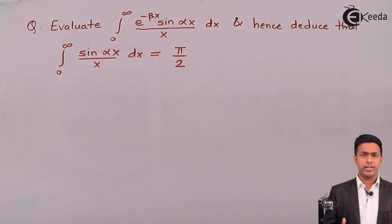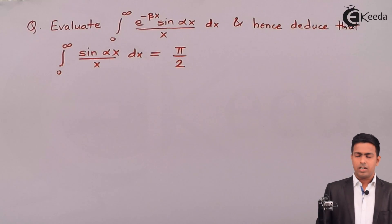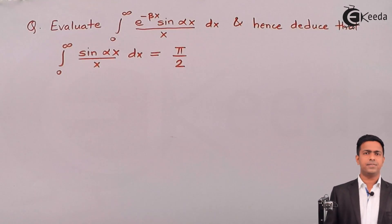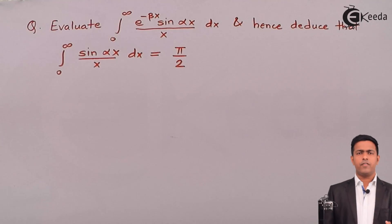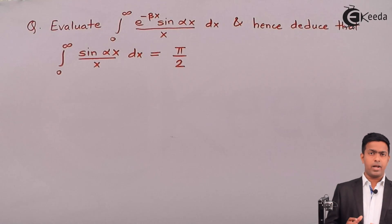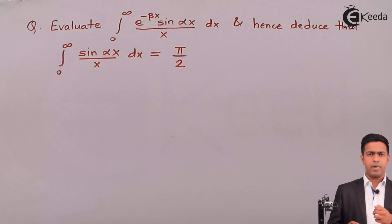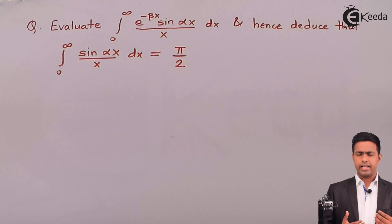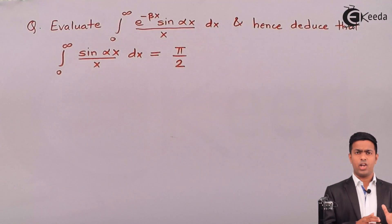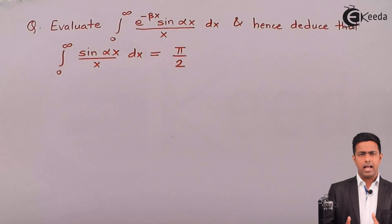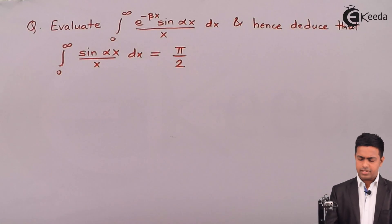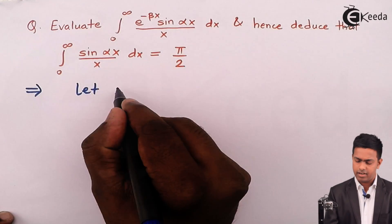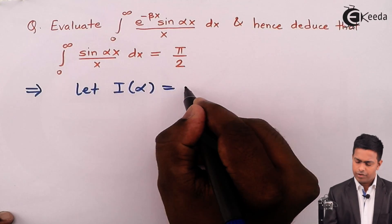We have to evaluate this by using DUIS. If you see carefully, here we have two parameters: alpha and beta. Whenever we have two parameters and want to apply DUIS, the rule says to take any one parameter for the integration. So here I can consider this integral as I(alpha) or I(beta) and proceed.